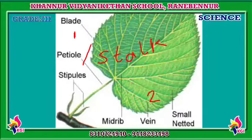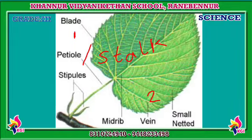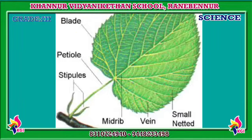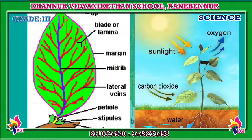In the middle of the leaf is the main vein. A number of side veins branch out from the main vein. The veins carry water to the leaf. The leaf is attached to the branch by the help of the stalk.